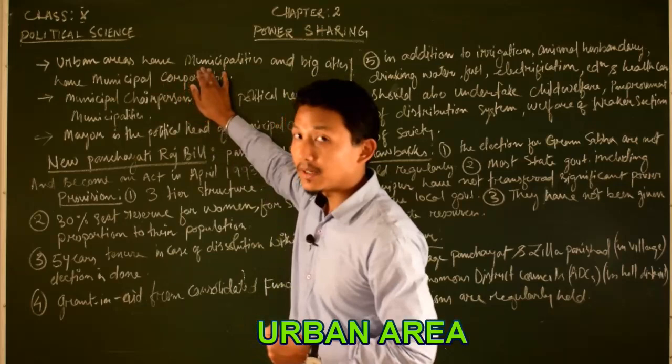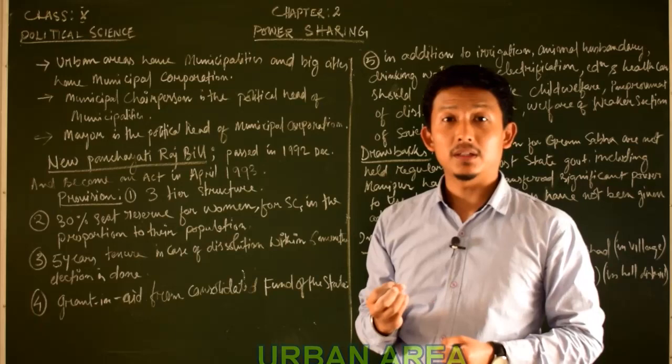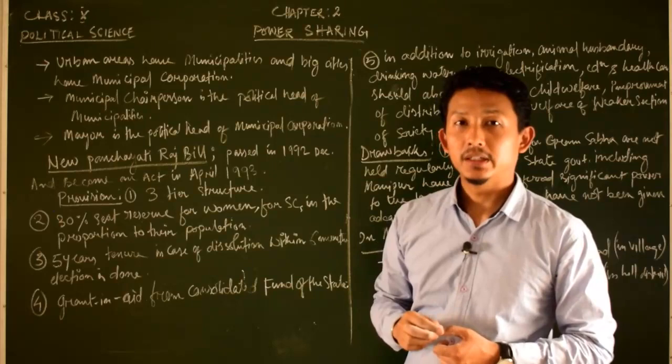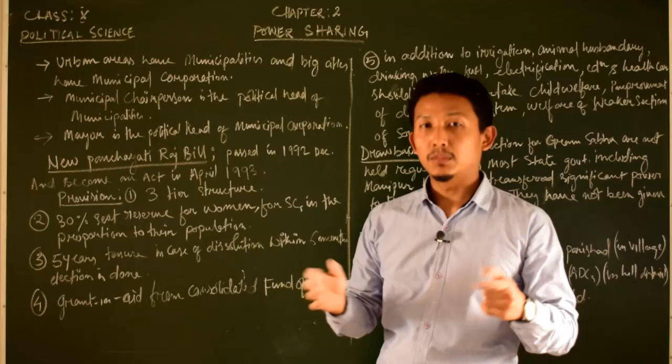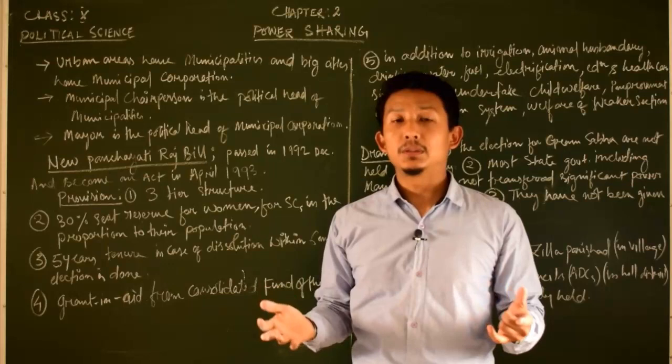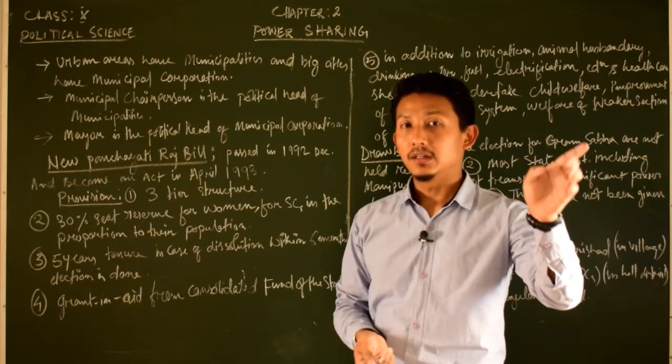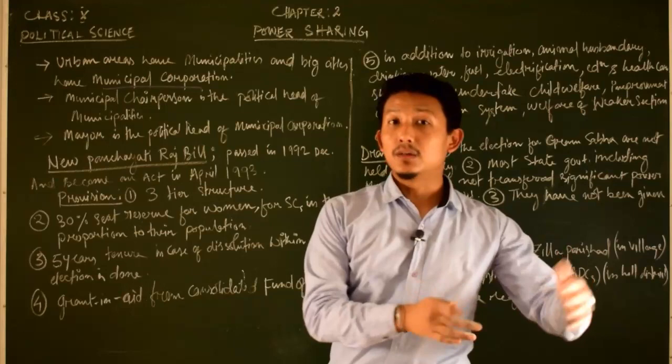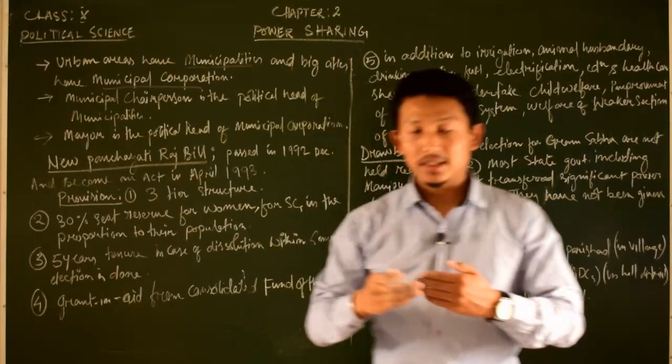How many municipalities are in the urban area as a form of local government? How many big cities are in the municipal corporation? Municipalities exist in towns like Vishnupur, Gumba, or other municipalities. At the village level, there is the gram panchayat, panchayat samiti, and the jila parishad.